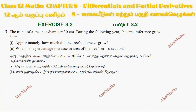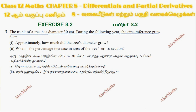Hi students, this is Alex here. Exercise 8.2, question number 5: the trunk of a tree has a diameter of 30 centimeters. During the following year, the circumference grew 6 centimeters. First subdivision: approximately how much did the tree's diameter grow?